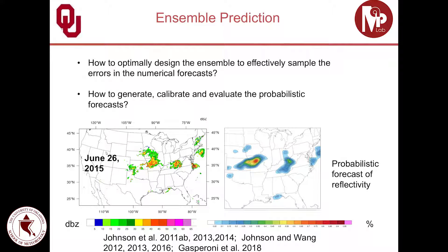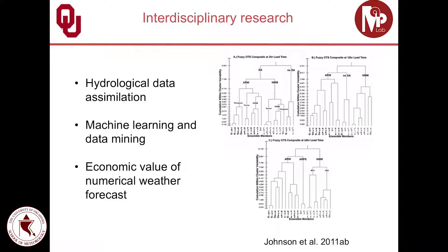In addition to data assimilation, we are also working actively on ensemble prediction, addressing questions such as how to optimally design ensemble samples to effectively capture errors in numerical forecasts, and how to generate, calibrate, and evaluate probabilistic forecasts. Our lab is also very interested in interdisciplinary research — we collaborate with hydrological modeling experts to conduct hydrological data assimilation, apply machine learning and data mining to improve data assimilation and ensemble prediction, and investigate the economic value of numerical weather prediction.